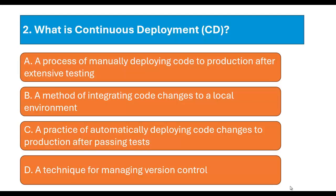The correct option is Option C: A practice of automatically deploying code changes to production after passing tests. Continuous deployment automates the process of deploying code changes to production without the need for manual intervention, ensuring that updates are delivered to users quickly and consistently.